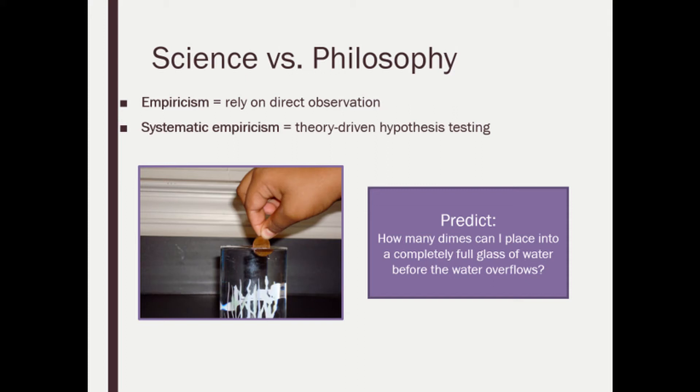We were discussing previously the need for systematic empiricism, which is where we let our data determine whether our hypothesis has been supported or not. I thought it would be fun if we illustrated that with some experiments that are really concrete and easy to measure and know whether we were accurate or inaccurate in our prediction.